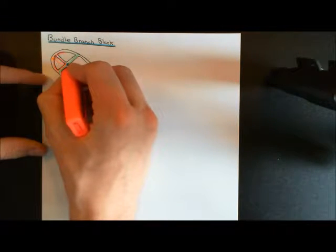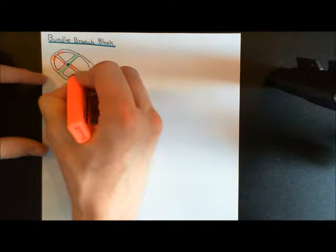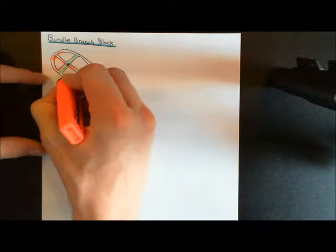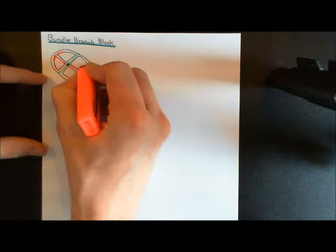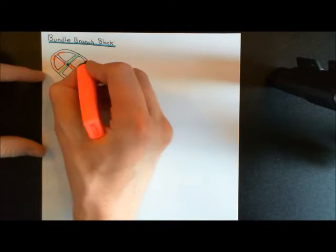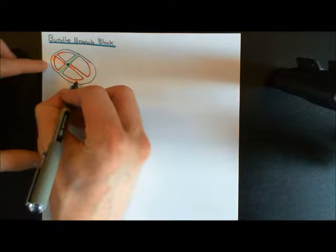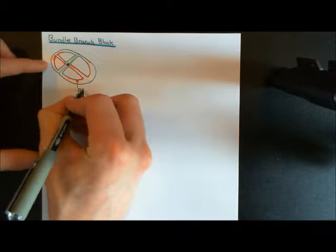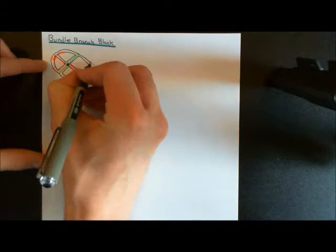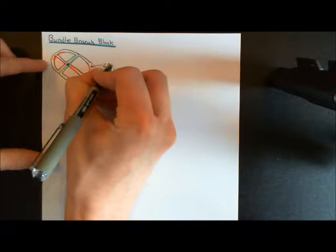Then the ventricular conduction pathway: first the bundle of His after the atrioventricular node, which splits into two — one portion stimulating the right ventricle, called the right bundle branch (RBB), and the other stimulating the left ventricle, called the left bundle branch (LBB).